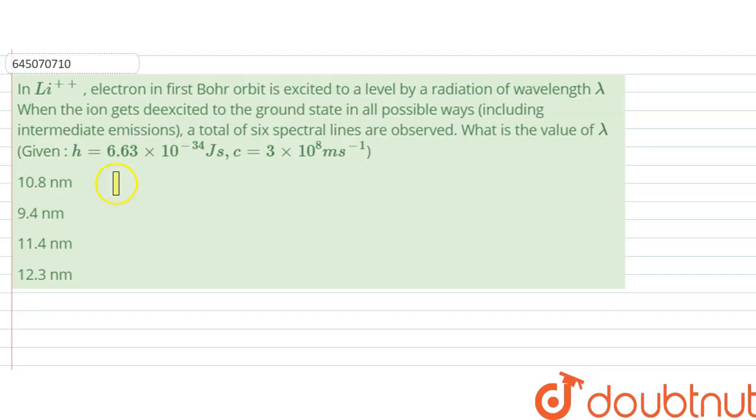Hello, we are given with a question. In lithium plus plus electron in first Bohr orbit is excited to a level by a radiation of wavelength lambda. When the ion gets de-excited to the ground state in all possible ways, including intermediate emissions, a total of six spectral lines are observed. What is the value of lambda?